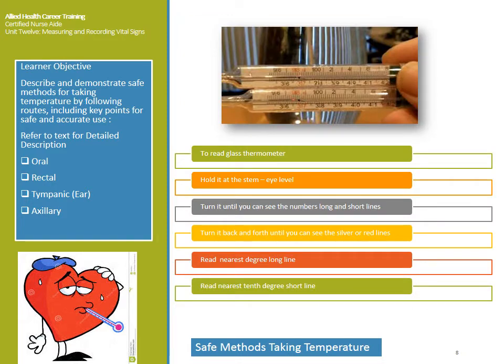To read the glass thermometer, hold it at eye level by the stem. Turn it so you can see all the numbers and the long and short lines, then turn it back and forth until you can see the silver or red line of colored alcohol. Read the nearest degree on the long line, then read the nearest tenth on the short line.